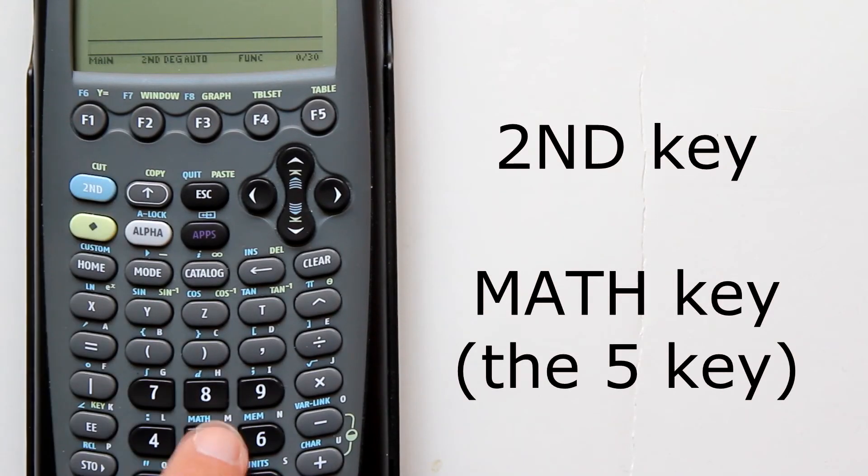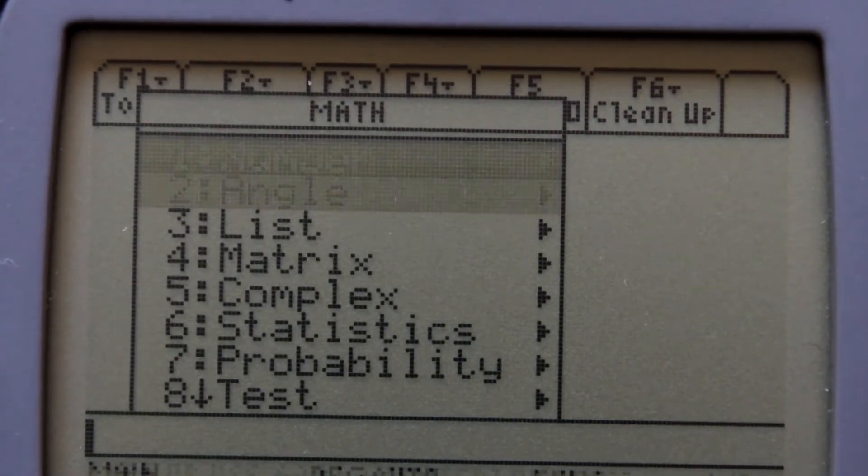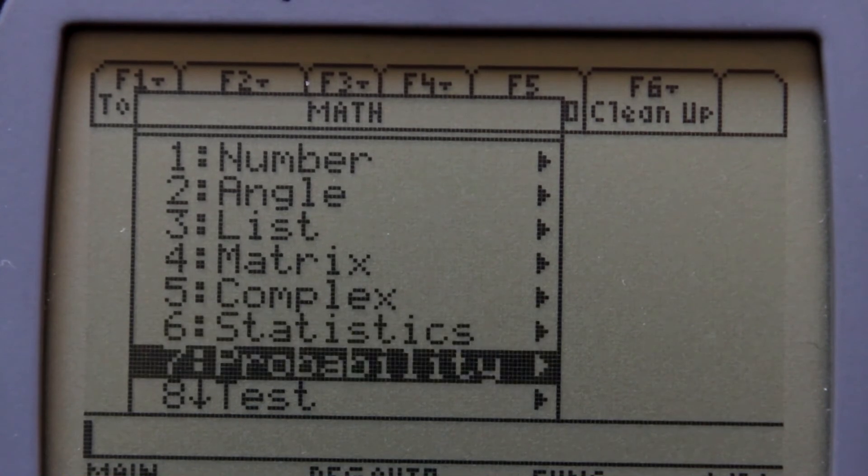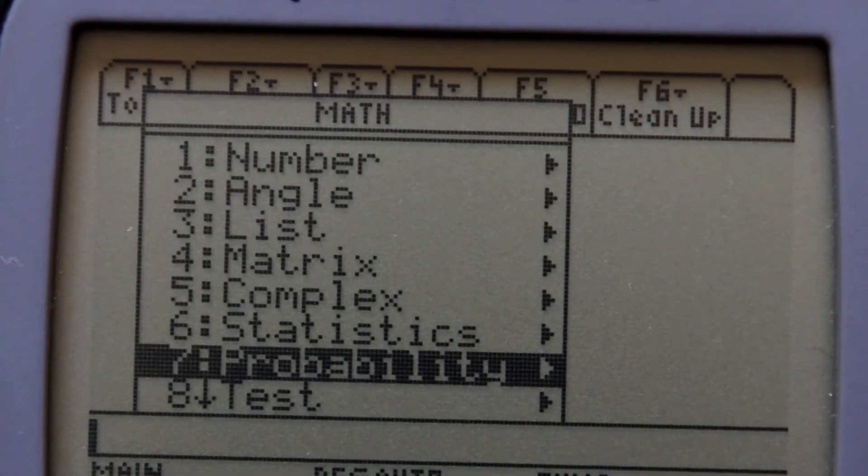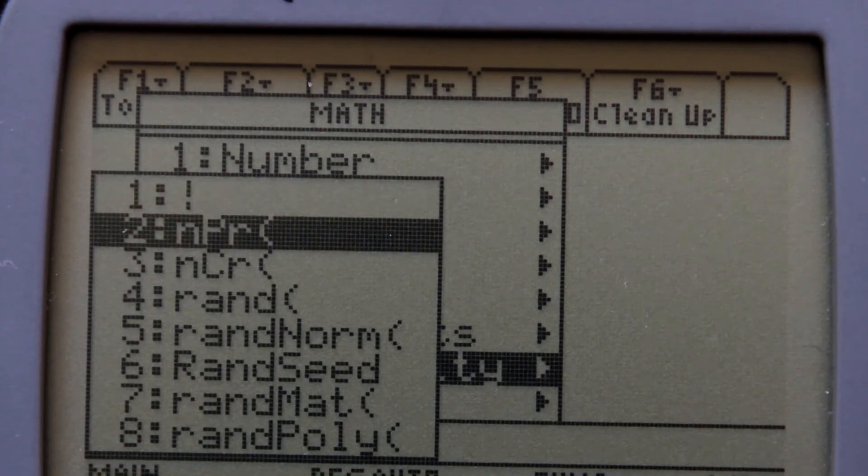go to 2nd, Math - Math is the 5 key. Choose number 7, probability, and choose number 2, nPr.